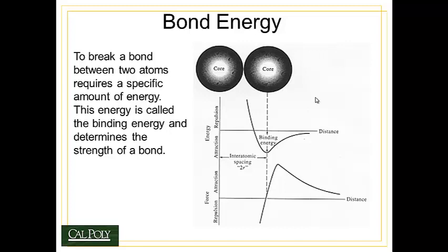There's something else we need to understand about atoms when they bond, and that is the binding energy between two atoms. Here we have two atom cores — imagine the atom with its electron shells surrounding it — and the distance between the centers of the two atoms is plotted on the x-axis. On the y-axis, we have the energy of the bond. As the energy goes up, the bond repels the two atoms apart, and as the energy goes down, they're attracted to each other. There's a neutral position, often called R0 or 2R (two times the radius of the atoms), where the two atoms are at a minimum energy point. That neutral position has the lowest possible energy state for that bond.